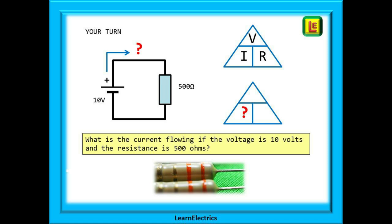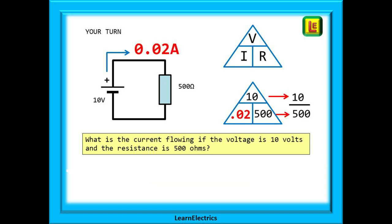What happens to the current if we increase the resistance? Let's have a go at this one. What is the current flowing if the voltage is 10 volts and the resistance is 500 ohms? Follow the Ohm's law method. Fill in the empty triangle and out pops the answer. 10 divided by 500 will give us a current of 0.02 amps, just two one hundredths of an amp. As the resistance increases it is harder for the current to get through.